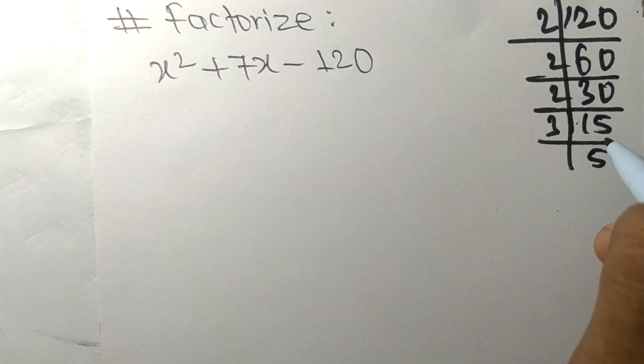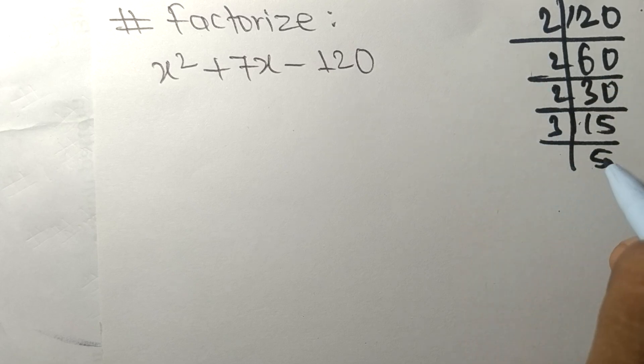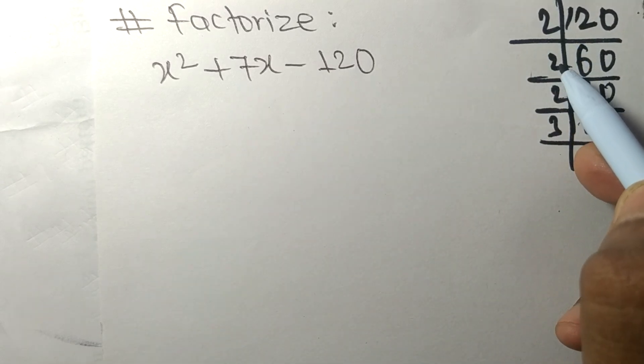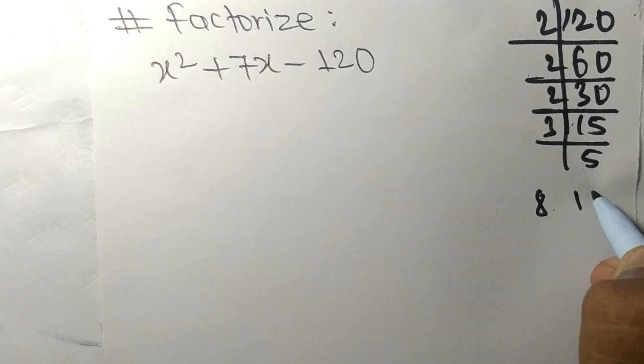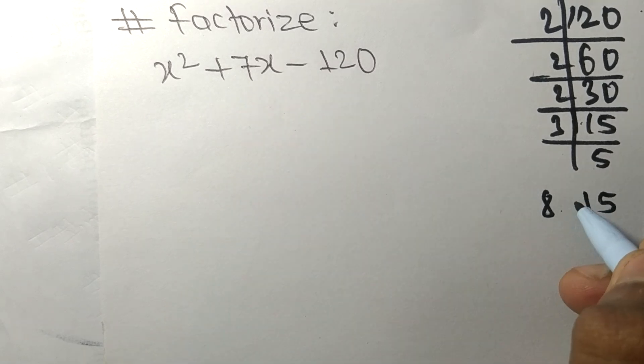3 times 5 means 15. By multiplying these numbers we need plus 7. So 2 times 2 means 4, 4 times 2 means 8, and 3 times 5 means 15.